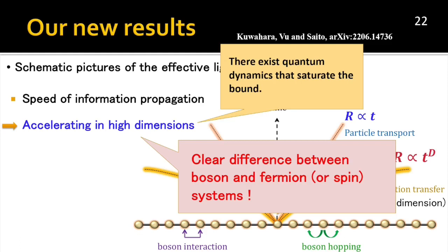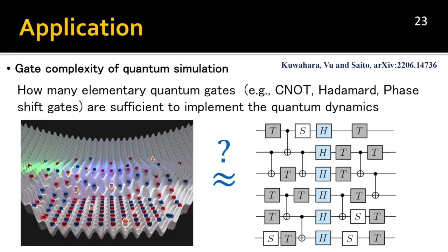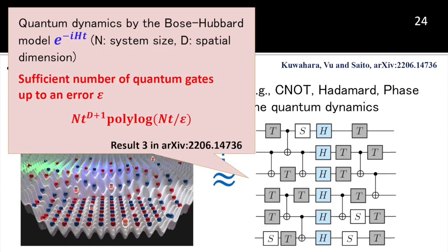This acceleration cannot be observed in fermion or spin systems, which unveils a clear difference between bosons and fermions. One of the crucial applications is that we can estimate the gate complexity of quantum dynamics. It is an essential task for a quantum computer to simulate quantum many-body dynamics, and the gate complexity problem asks how many elementary quantum gates — such as CNOT, Hadamard, and phase-shift gates — are sufficient to implement the quantum dynamics. By combining our new results with existing simulation techniques, we can prove that the gate complexity is given by a specific form, where M denotes the system size and D the spatial dimensions.